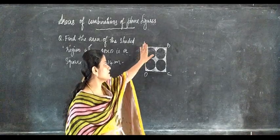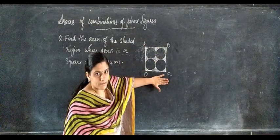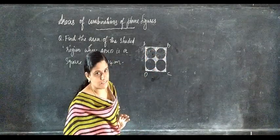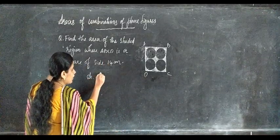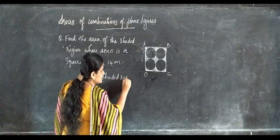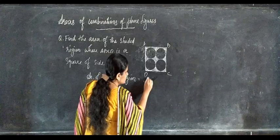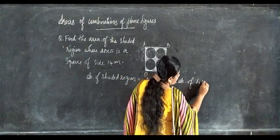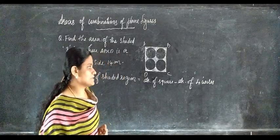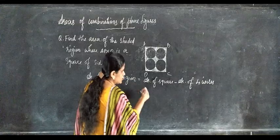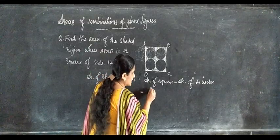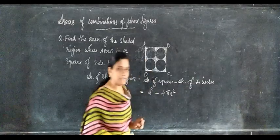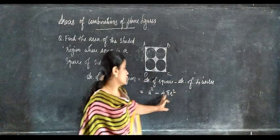From this square, if we subtract the area of the four circles, we get the area of the shaded region. So: area of shaded region equals area of square minus area of four circles, which is side squared minus 4 π r square. The side of the square is 14 cm.